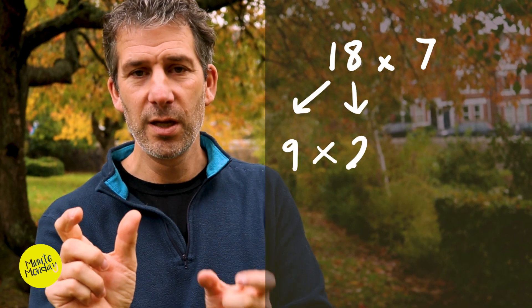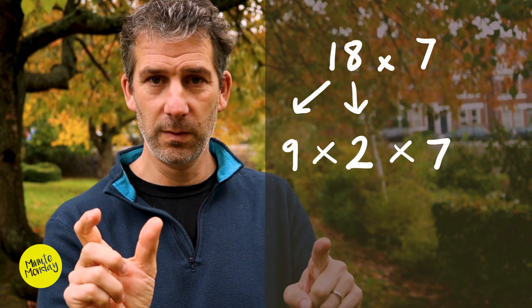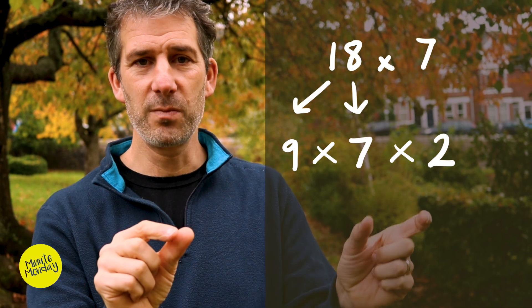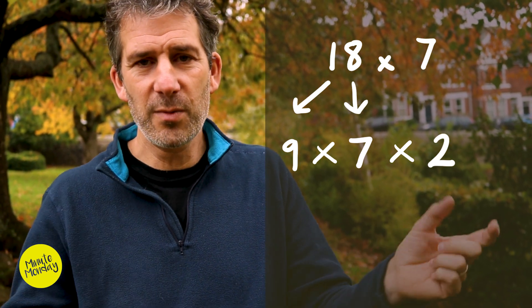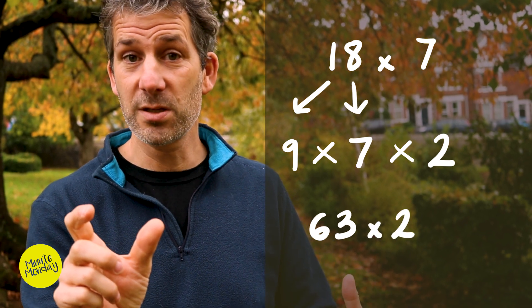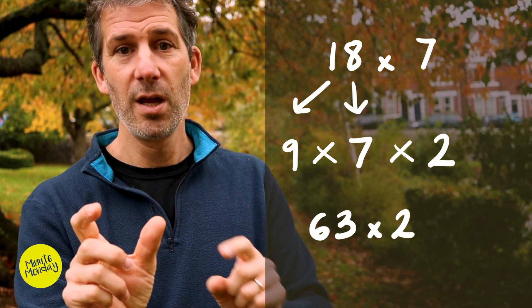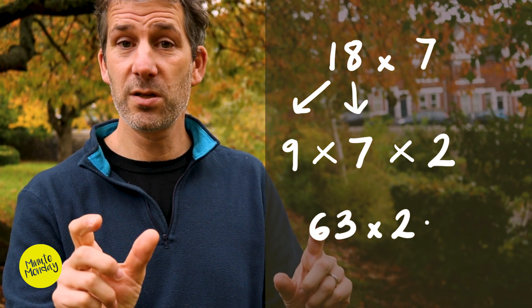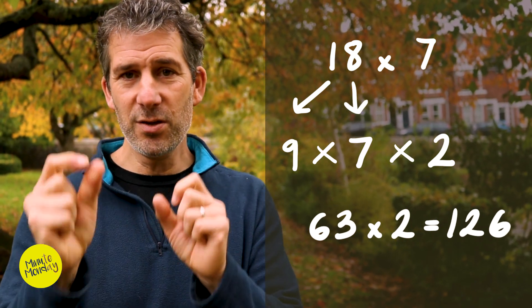Let's do an example: 18 times 7. I'm going to break the 18 down into factors — a pair of numbers that multiply to 18. I'll go with 9 times 2, so I have 9 times 2 times 7. Then I rearrange: 9 times 7 times 2. I know 9 times 7 is 63, then I double it. Double 60 is 120, double 3 is 6, so 63 times 2 is 126.